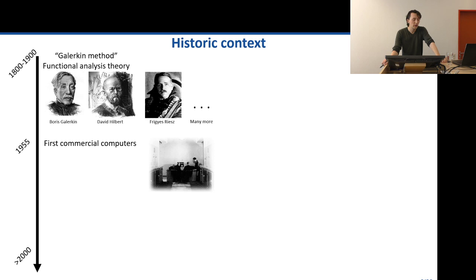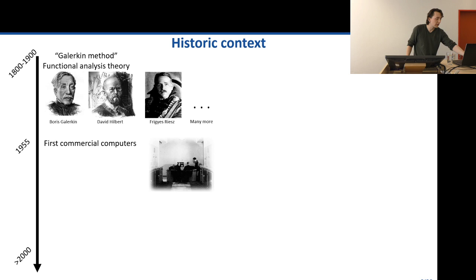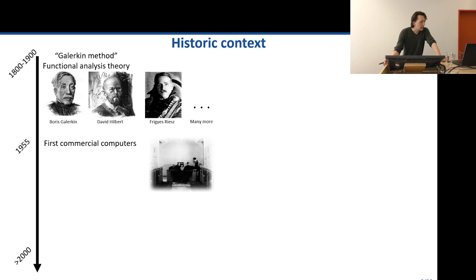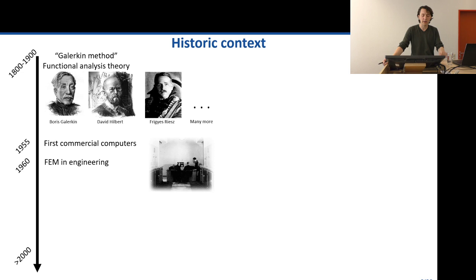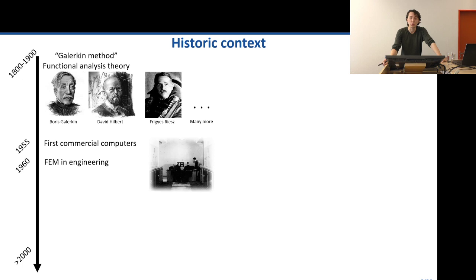If we skip ahead a little bit, we see that the first commercial computers occurred in 1955 — that's when companies could buy these computers. In this picture from 1955, that's actually Alan Turing. Roughly around this time, engineers picked up the approach and developed the finite element method almost independently of the mathematical basis at that time, as an approach to compute these mechanical systems. This was very shortly after the introduction of the first computers.